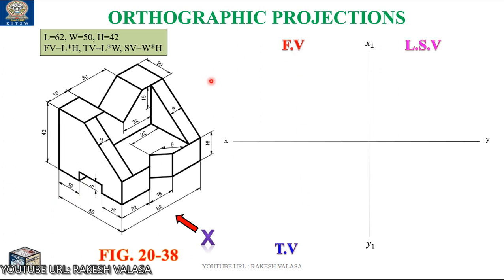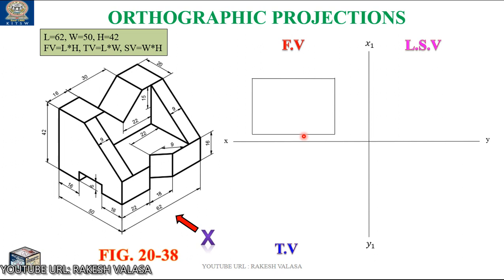After completion of this step, next we need to construct three rectangle boxes: one is the front view rectangle box, second one is the top view rectangle box, and third one is the side view rectangle box. For constructing the front view rectangle box, the dimensions are length and height — length is 62 mm, height is 42 mm. With the help of these two dimensions, we need to construct one rectangle box in the front view position. You can leave some space — take 10 mm from X1, Y1 and 10 mm from XY, or leave sufficient distance from the XY line and X1, Y1 line. Length is 62 mm, height is 42 mm. Next, construct the top view rectangle box.